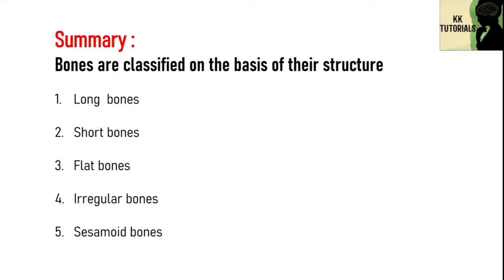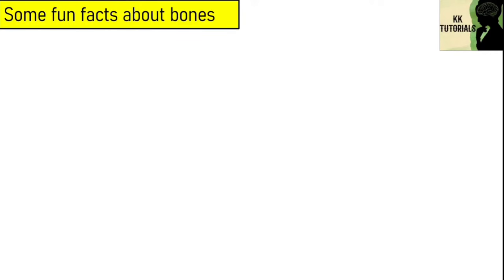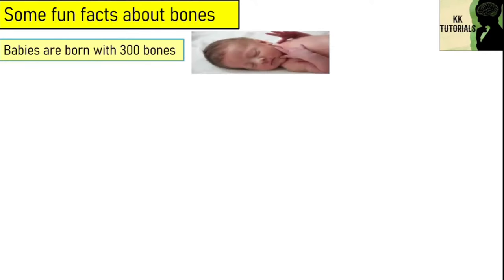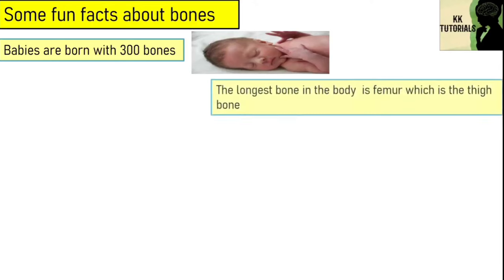Now let's talk about some important fun facts about bones. Babies are born with 300 bones, but adults end up with only 206 bones. It's not because bones disappear as we grow older; instead, these tiny bones fuse together to form the larger bones of the skeletal system.